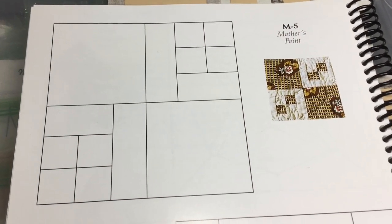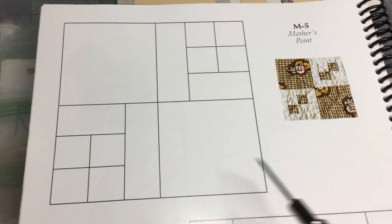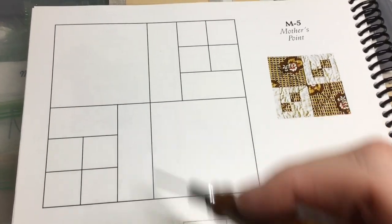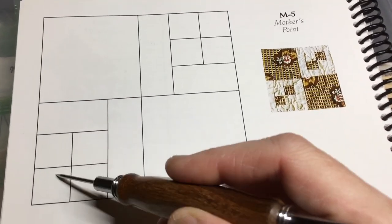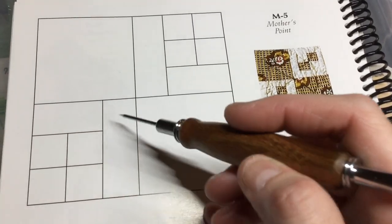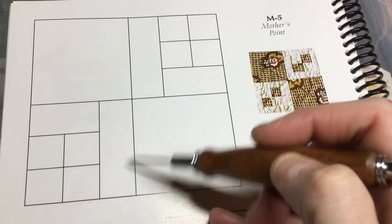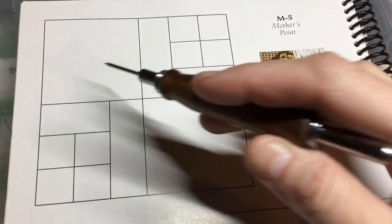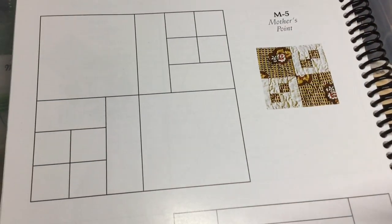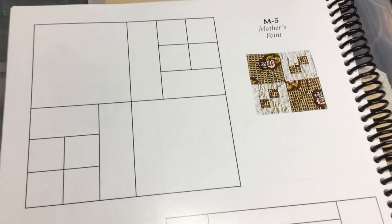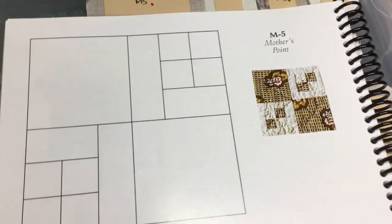M5 is the next block in this row and it's very straightforward. We've got all squares and rectangles so we're going to assemble this four-patch, attach it to this rectangle and attach it to this one to make the square, and then repeat the process for these and then just put them together. So this is a very straightforward block. I've got my pieces all laid out beside me.